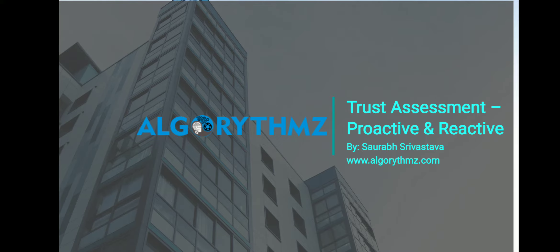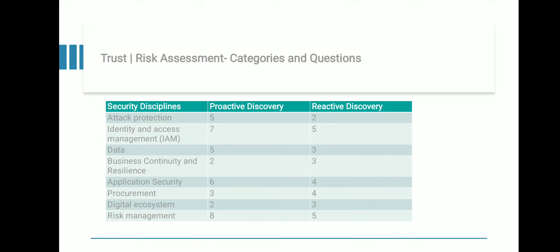Now before I jump into the categories and questions for the risk assessment, I would like to share one thing: in the past, the focus of the security team was more from a bottom-up visibility standpoint, like to have data about devices, servers, networks, operating systems and workspaces. But now since cloud has come into the picture, top-down visibility has become very important from a zero trust perspective. So things like entities, information, processes, transactions and applications are very important.